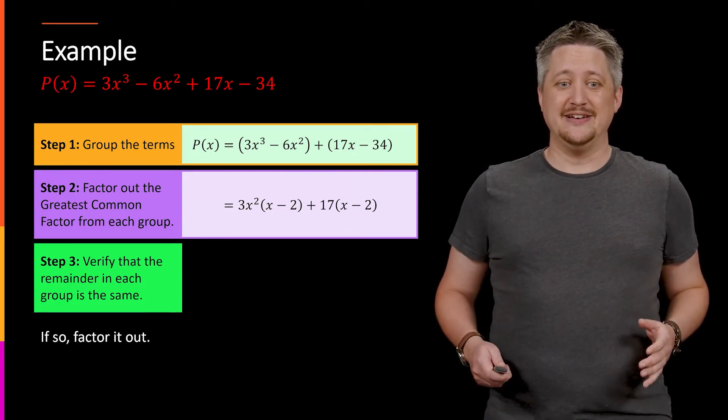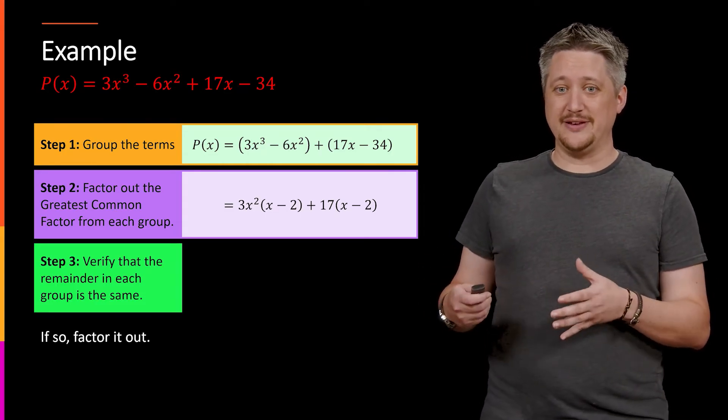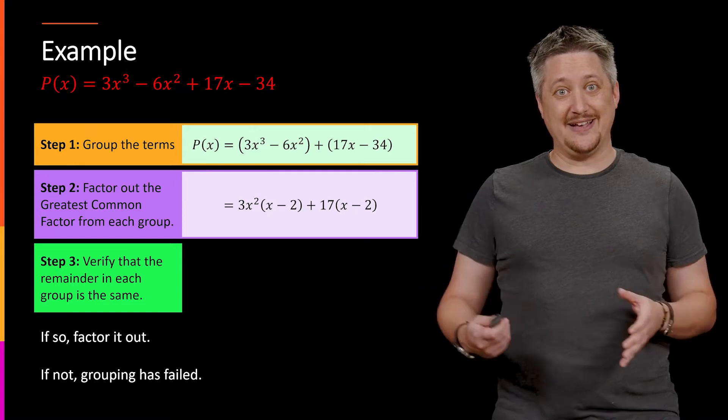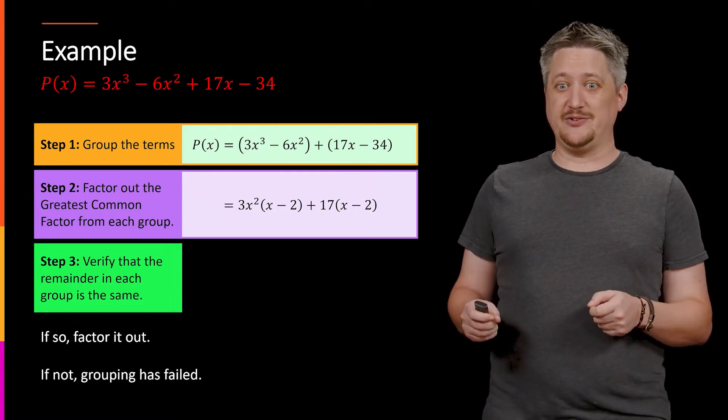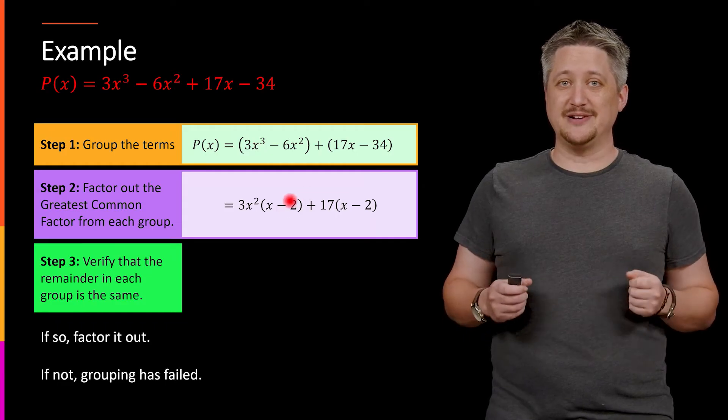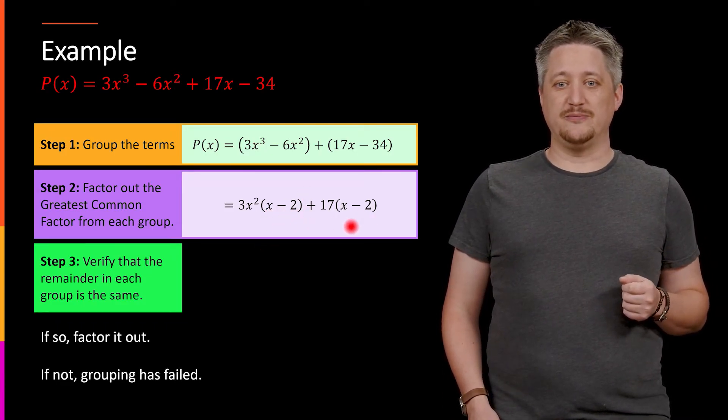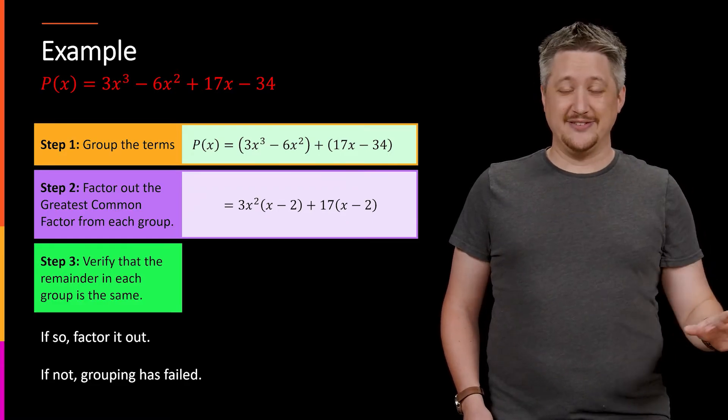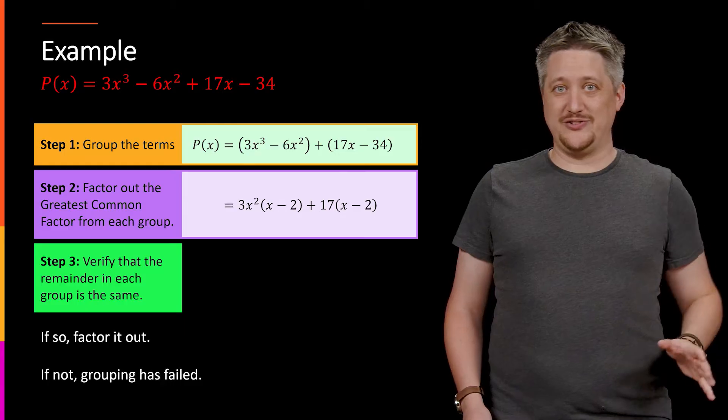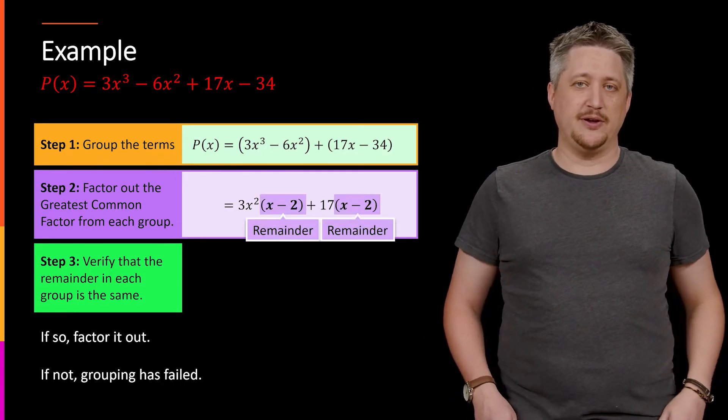And in fact, that's necessary. So if that is the case, if we do have the same thing, we can factor that out as a single piece. But if we don't, that means grouping failed. So to be very clear, what you want to do is look for whatever the remainder is and verify that yes, indeed, that is the same thing. Otherwise, you can't really go to the next step. You have to go back and try some other method, some other grouping, something like that.